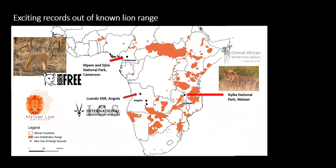It's not all doom and gloom. Through this extensive data collection process, we've actually received some really exciting out-of-range records for lions, which may hint at the reestablishment of resident prides in areas where they were previously thought to have disappeared. The first example is in central Cameroon, where a recent expedition by Born Free found a small group of lions in Mpem and Dejem National Park. We also had a few sightings reported in Luwando Special Nature Reserve, where the pride consisted of a female with cubs — the first seen in the area for at least a decade.